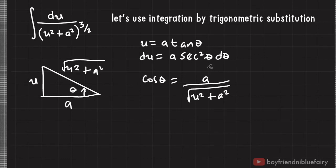And rearranging this expression, we have square root of u squared plus a squared equals a secant theta.